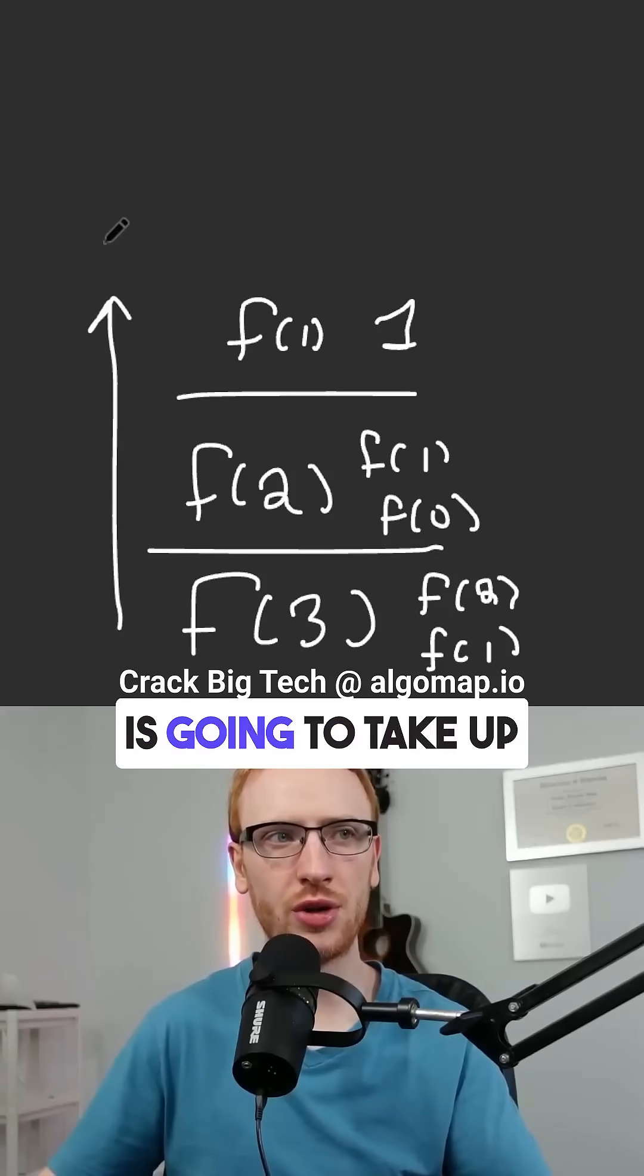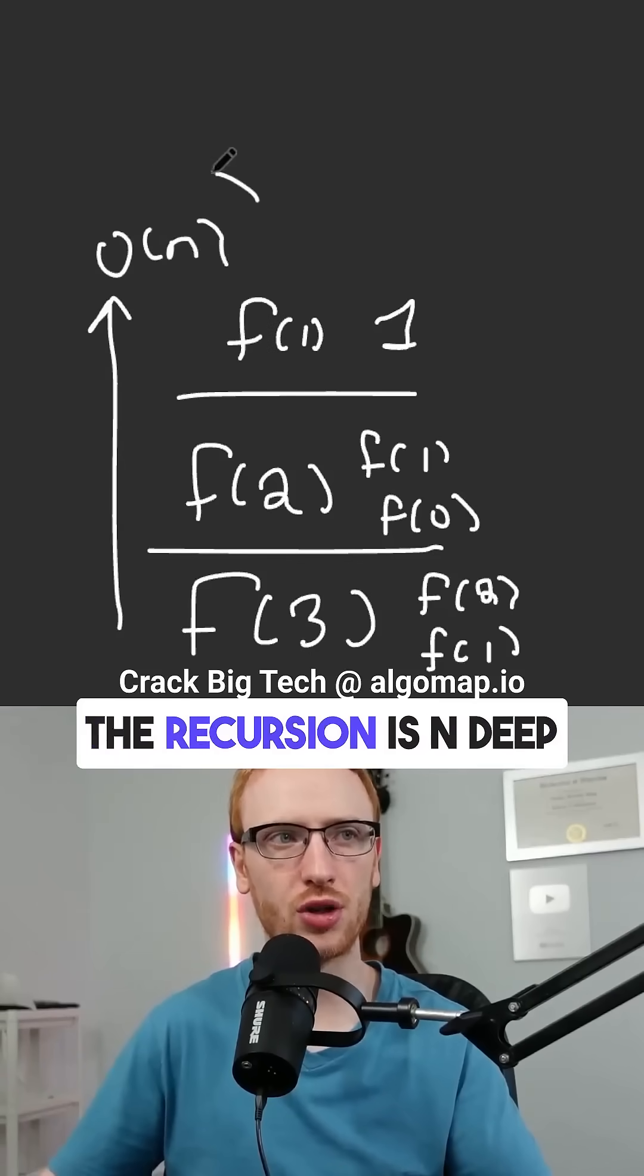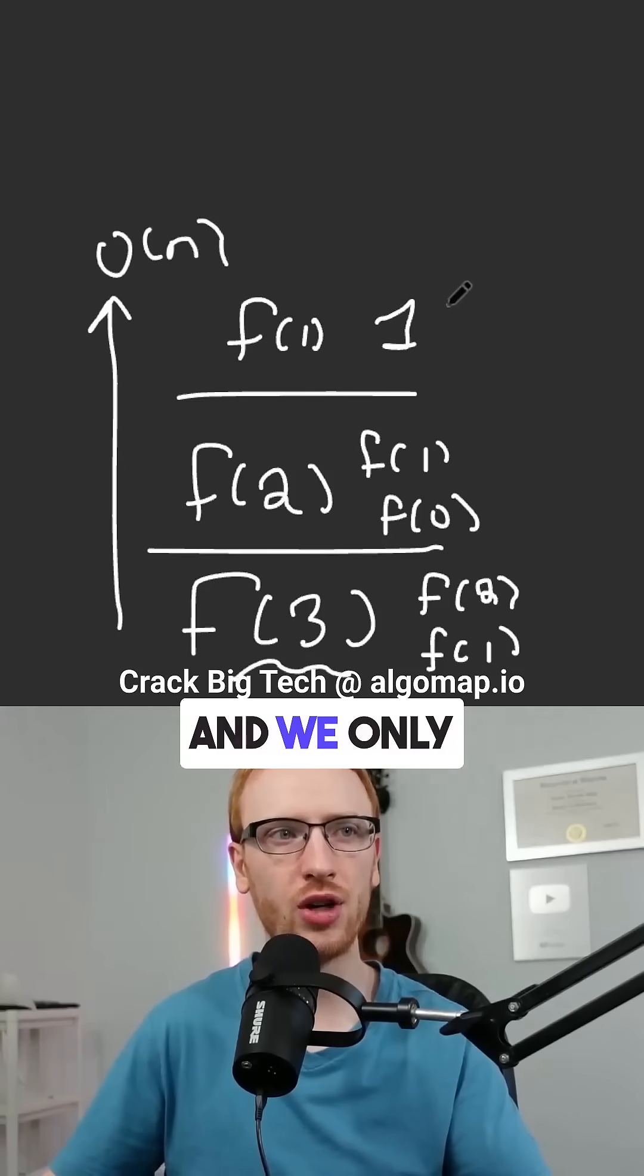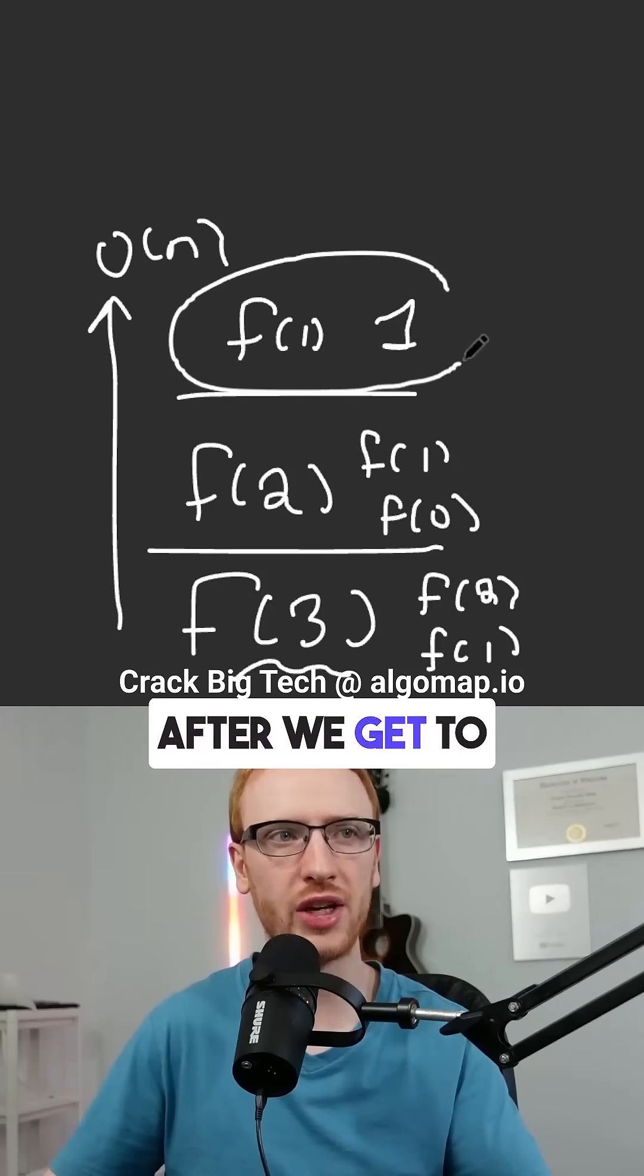Now notice this recursive call stack is going to take up O of n space. The recursion is n deep because we start at n, and we only start relieving space after we get to a base case.